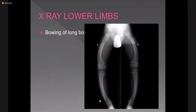Because of the softening of bone, bowing of the bones also occurs. There is marked bowing of bilateral femur and bilateral tibia and fibula.